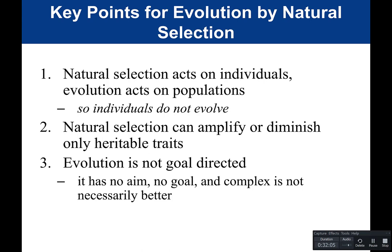Natural selection can amplify or diminish only heritable traits — building muscle through weightlifting will not affect offspring because that is not heritable. Evolution is not goal-directed; it has no aim, no goal, and complex is not necessarily better. Evolution is changing depending on the environment, and there isn't one ideal trait beneficial in every case — it's a population-by-population, environment-context situation driving evolution.